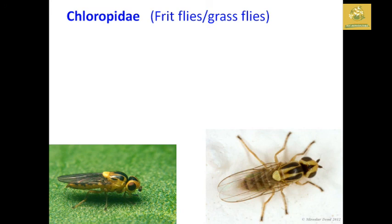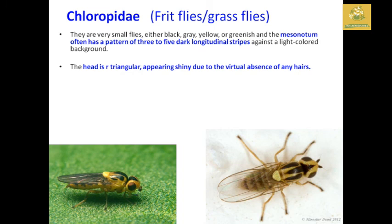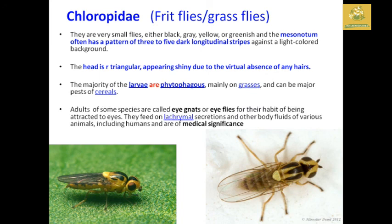Chloropidae — the frit flies, also called grass flies. They are very small flies, either black, gray, yellow, or greenish. The mesonotum often has a pattern of three to five dark longitudinal stripes against a light-colored background. The ocellar triangle is triangular and appears shiny due to virtual absence of any hair. The majority of larvae are phytophagous, mainly feeding on grasses, and they are major pests of cereal crops. Adults of some species are known as eye flies due to being attracted to the eyes, feeding on lacrimal secretions and other body fluids of various animals including humans.